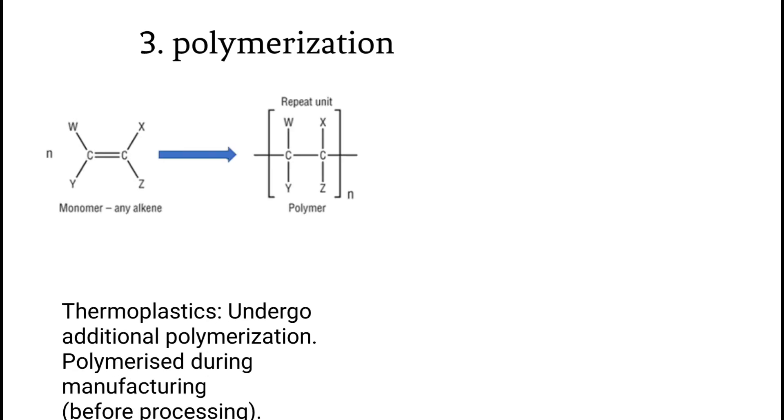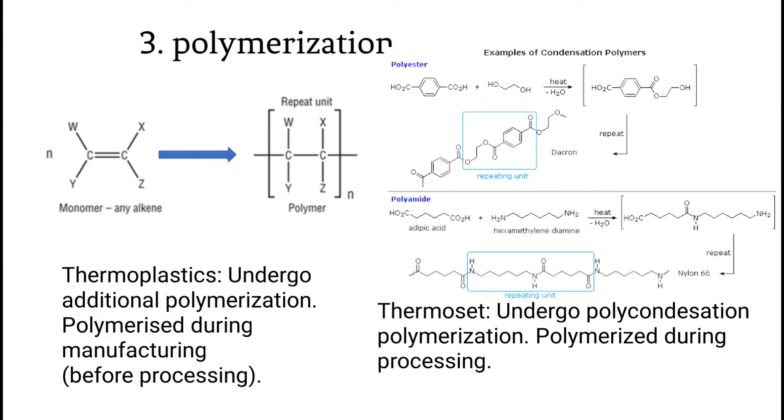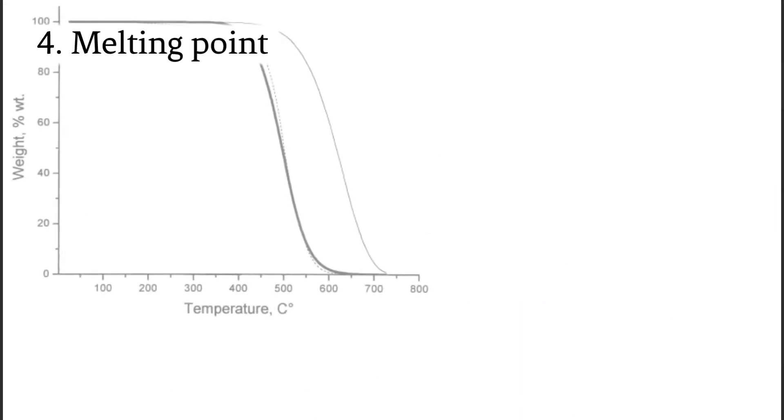Polymerization: Thermoplastics undergo additional polymerization, polymerized during manufacturing before processing. Thermosets undergo polycondensation polymerization, polymerized during processing.